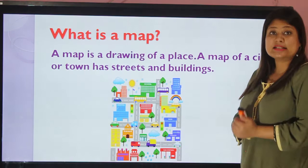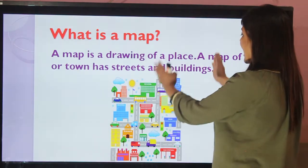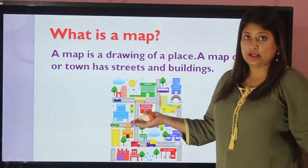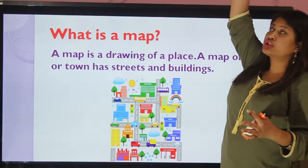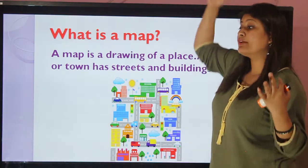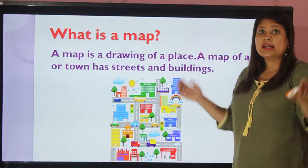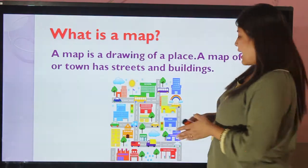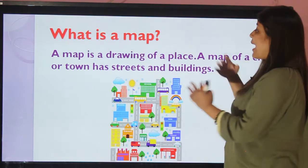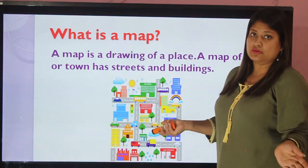A map of a city or town has streets and buildings. If we see a city like our Butwal from the top — like from a helicopter or chopper looking downwards — we can see streets, buildings, and vehicles. Similarly, a map is also a picture of the streets and buildings around.